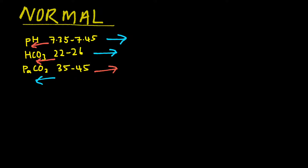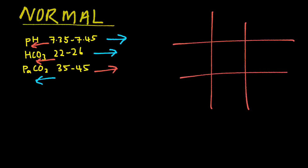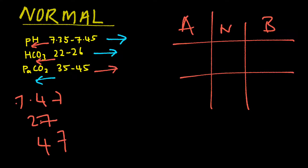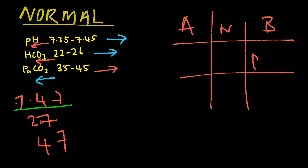So we draw our tic-tac-toe and we fill in acid, normal, and base. Let's say we have three values. pH is 7.47, HCO3 is 27, and PaCO2 is 47. For pH 7.47, that is alkaline, so we fill that in here — alkaline, pH.